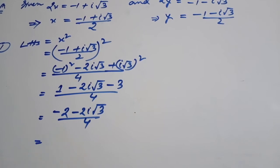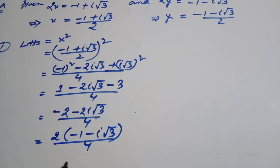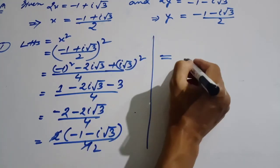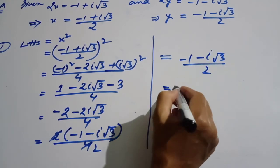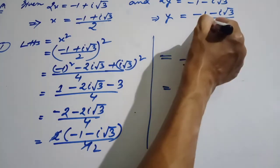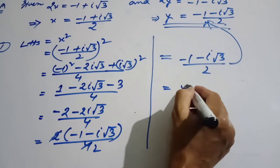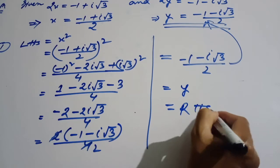This is equal to 1 minus 1 minus i root 3 by 4. This is cancelled. Minus 1 minus 1 minus 2, multiply 3 minus 3, link to minus 1.